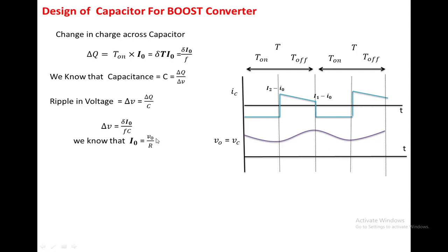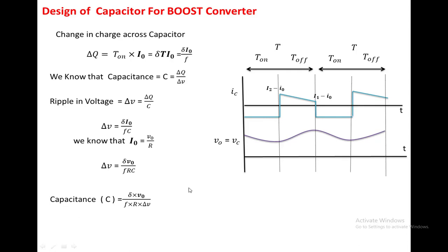We know that I0 equals V0 divided by R for constant load current. Substituting in place of I0, the ripple in output voltage delta_V equals delta into V0 divided by (F into R into C). From this expression we can find the value of capacitance: C equals delta into V0 divided by (F into R into delta_V), where delta_V is the ripple in output voltage — the difference between the maximum and minimum output voltage of the boost converter. In this manner we can find the value of inductance as well as capacitance for a given boost converter. These values are highly dependent on the ripple current, ripple voltage, and frequency of switching operation. Thank you very much for watching this video.